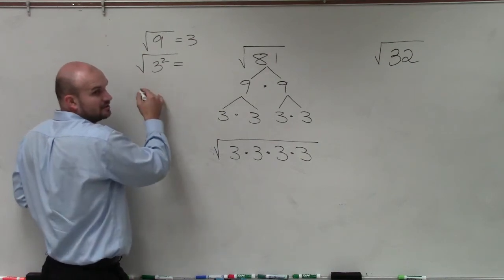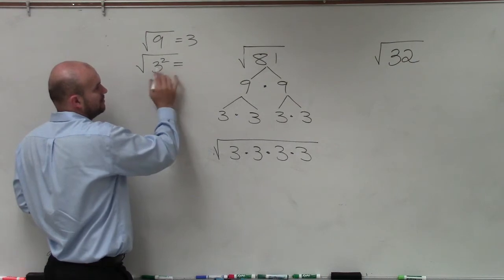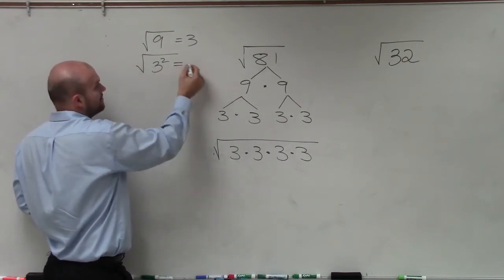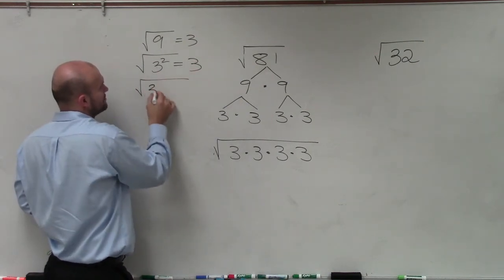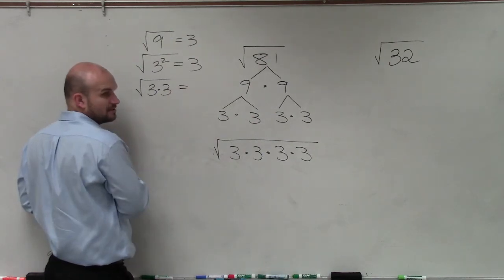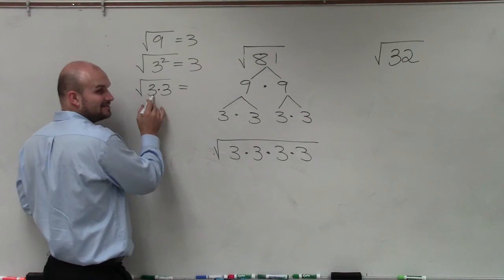So the square root of 3 squared is what? What's 3 squared? 9. What's the square root of 9? 3. Can I rewrite 3 squared as 3 times 3? Yes. So the square root of 3 times 3 is 3. These are all the same answer but different representations.